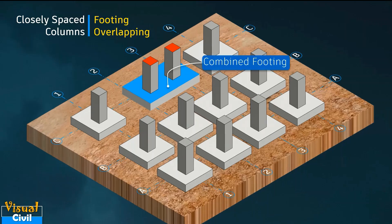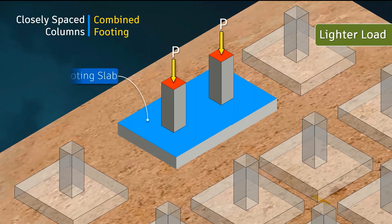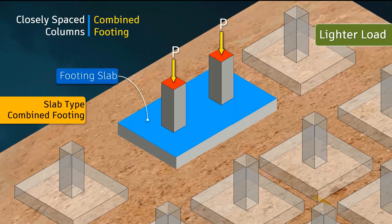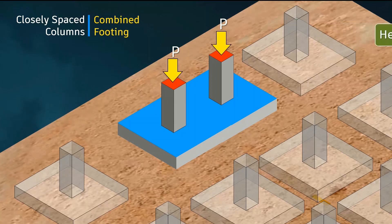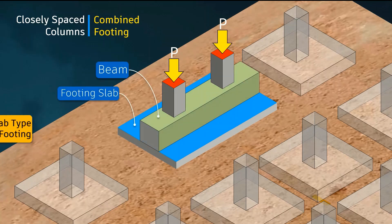When these columns are subjected to a relatively lighter load, then slab type combined footing can be used. But if the loads are heavy, then to economize the material, beam slab type combined footing can be preferred.